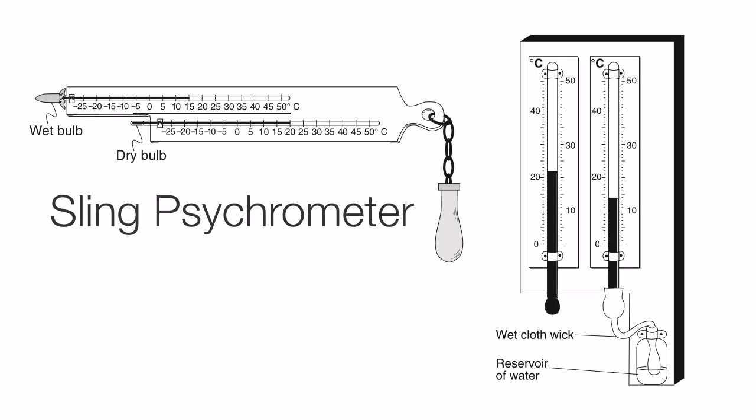And so what will happen is the water in the wet bulb evaporates, and as it evaporates, it cools down that wet bulb thermometer. Now how quickly it evaporates is determined by how much moisture is in the air. And so by looking at how close or far apart your wet bulb and your dry bulb are, you can get a good gauge of how much moisture is in the air.